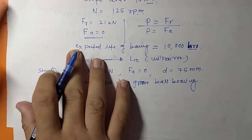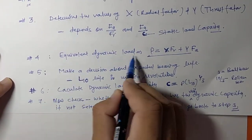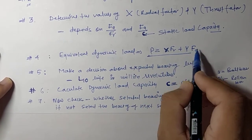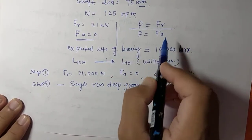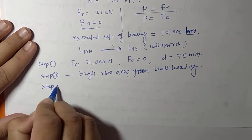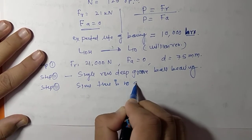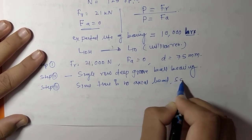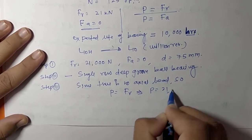Step 3 — since there is only radial force and no axial load, we skip directly to the equivalent dynamic load. P = X·FR + Y·FA, but since FA = 0, P = FR = 21,000 N.